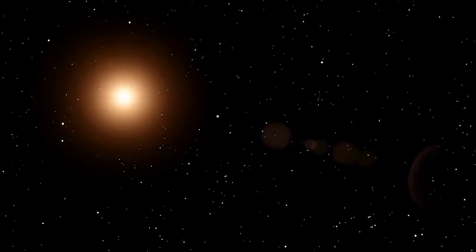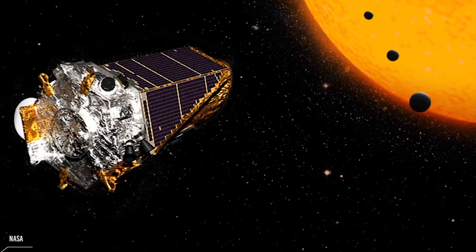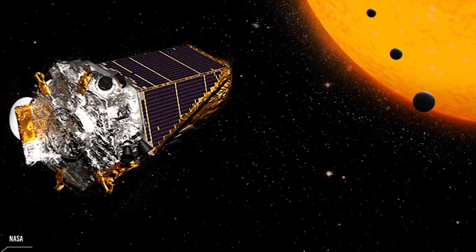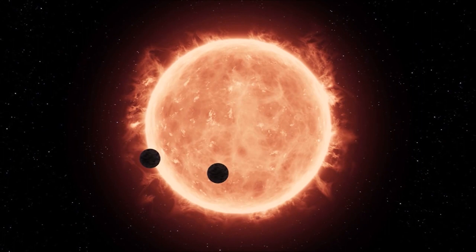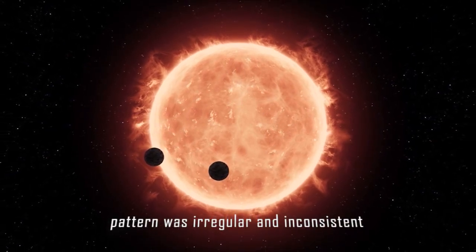Typically, when a planet passes in front of a star, the star's brightness dims by a small amount, which is a regular and predictable pattern. However, the fluctuations seen in Tabby's Star were much larger, and the pattern was irregular and inconsistent.